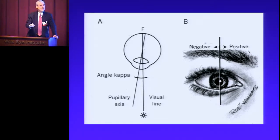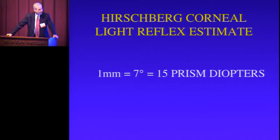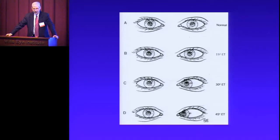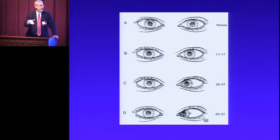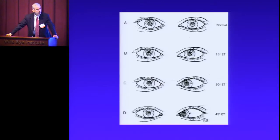Usually that angle kappa is slightly nasal to the center of the pupil. From the angle kappa comes the first way that we measure strabismus: the Hirschberg corneal light reflex. That's based on the fact that one millimeter of decentration on the cornea equals 15 prism diopters. In the diagram, the first example shows symmetrical light reflexes — that person would have straight eyes. However, with increasing amounts of esotropia, the light reflex in one eye is decentered by a greater amount.